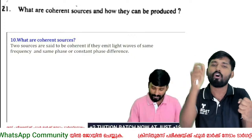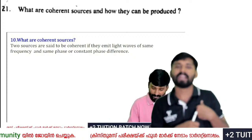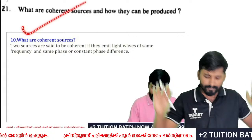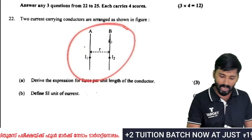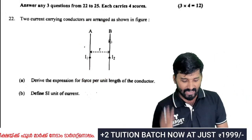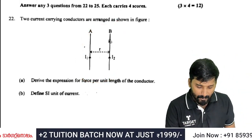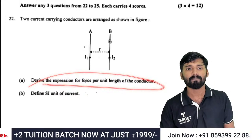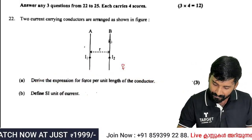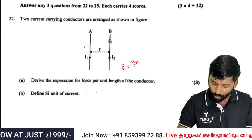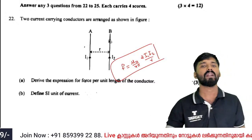One cardboard with pinholes under coherent sources. Two current-carrying conductors are arranged as shown in the figure. Derive the expression for force per unit length between them. The formula is F/L = μ₀ / 4π × 2I₁I₂ / r.